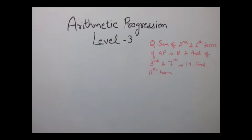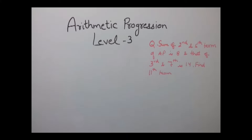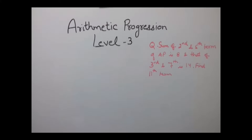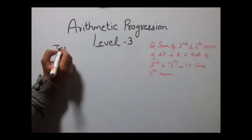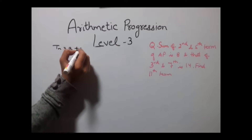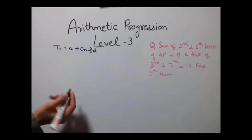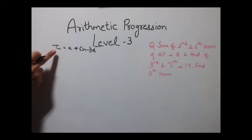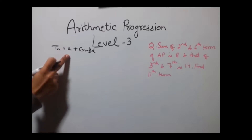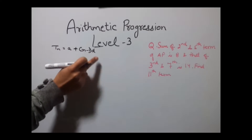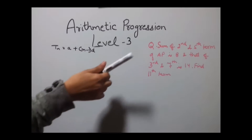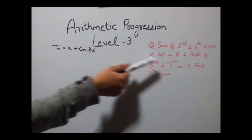The example says: sum of the 2nd and 5th term of an AP is 8, and that of the 3rd and 7th is 14. Find the 11th term. We know that to find any term of an AP, the formula is Tn = a + (n−1)d, where Tn is the nth term, a is the first term, n is the term number, and d is the common difference. It is given that the 2nd and 5th terms sum to 8.